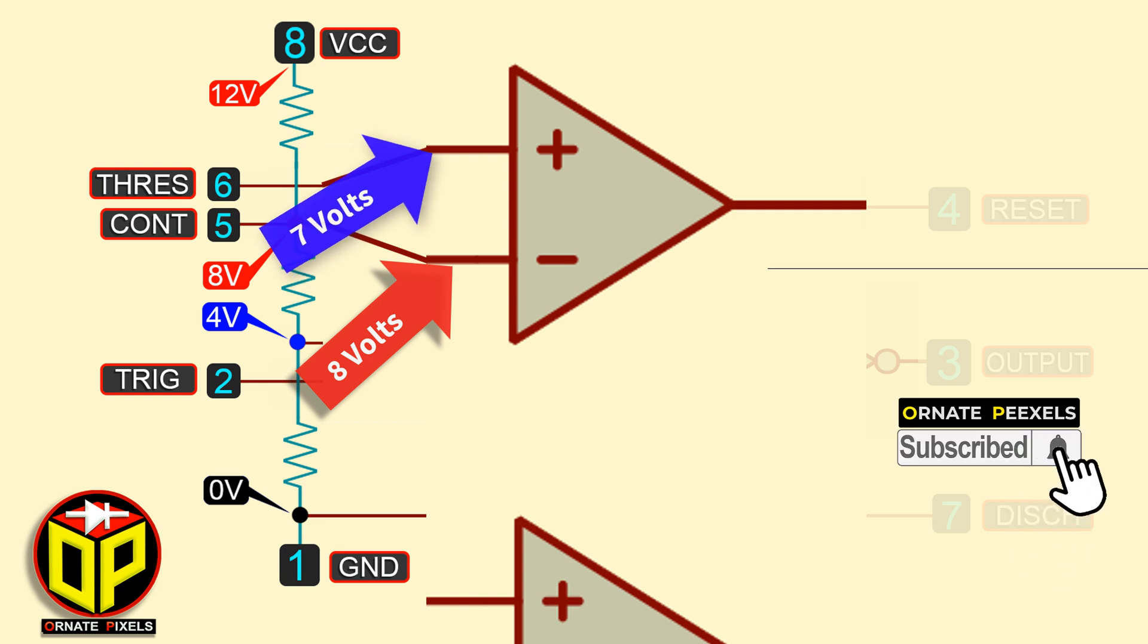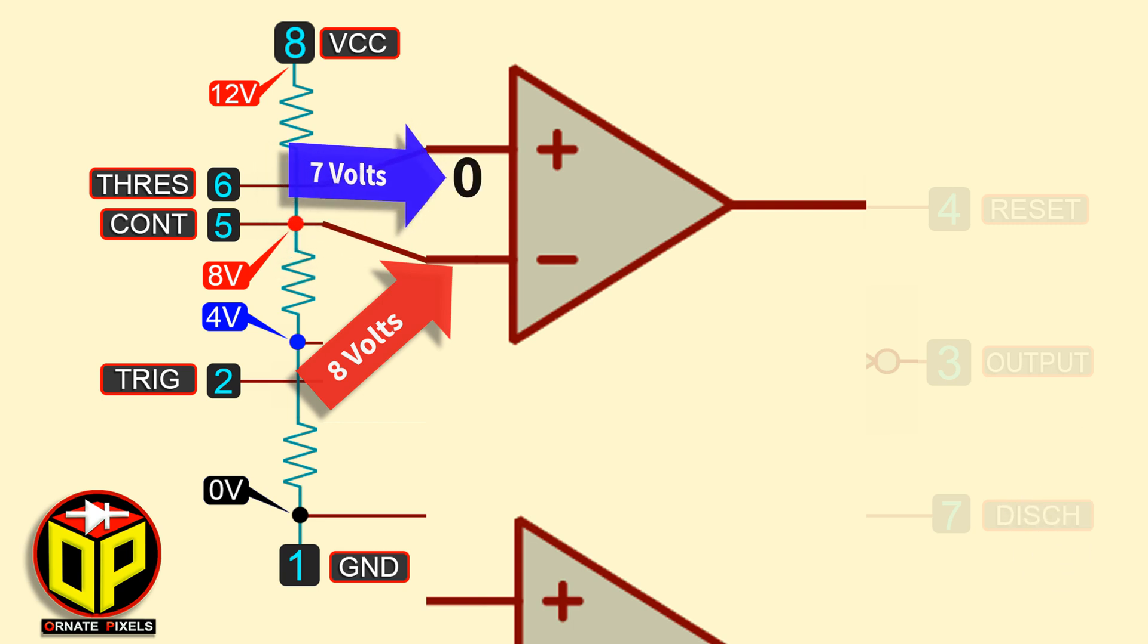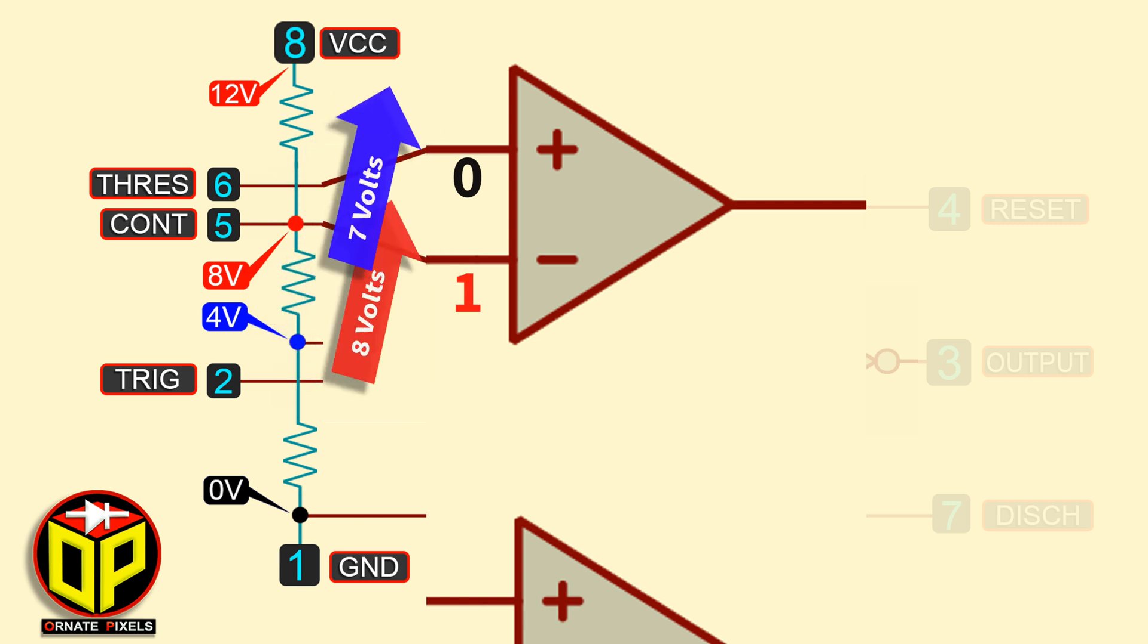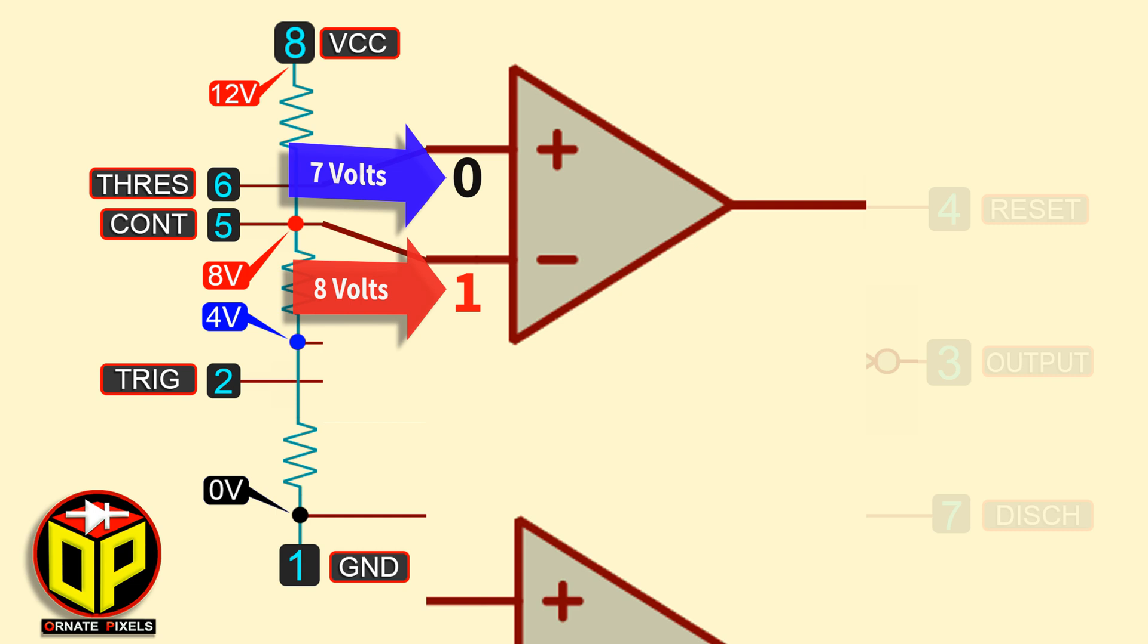So, 7 volts is low or logically 0 and 8 volts is high or logically 1. In this condition, the comparator will output a high voltage.